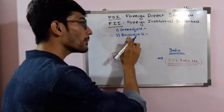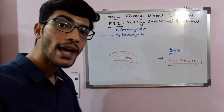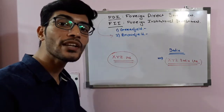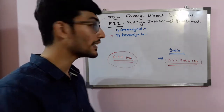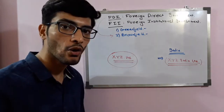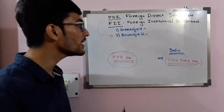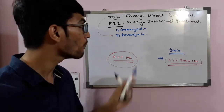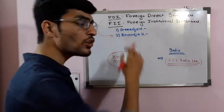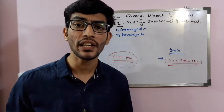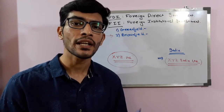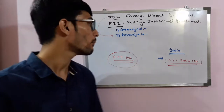Brownfield Investment is when a parent company purchases an existing facility to begin new production. Let me take real examples of both. If we talk about Greenfield Investment, there is a company from China called BBK Electronics.